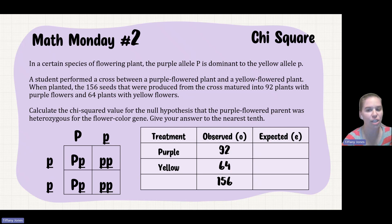So based on our question, it tells us that 92 of them are going to be purple and 64 of them are going to be yellow. So it gives us a total of 156. If I wanted to figure out my expected, I'd go back to my Punnett square. 50% of them will be purple. So 156 divided by 2, or 156 times one-half, is going to give me 78.